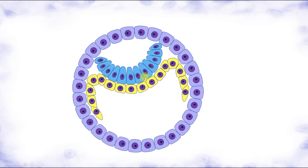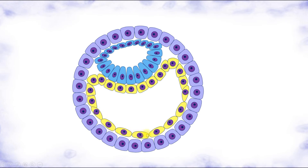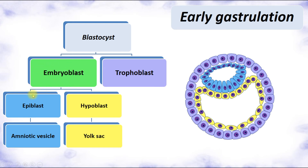As a result of this growth, the epiblast and hypoblast each form two vesicles. The epiblast continues its growth and forms a vesicle enclosed on the apical side called the amniotic vesicle. The hypoblast also continues its growth and forms another vesicle called the yolk sac. Here we can see these two vesicles attached to each other, each with its own cavity.